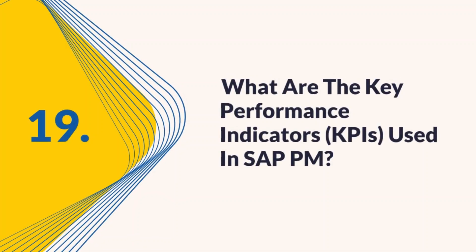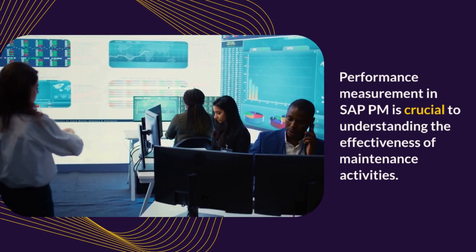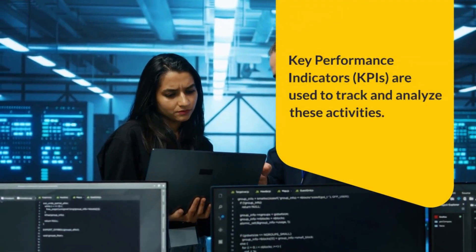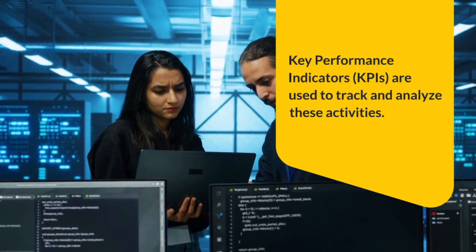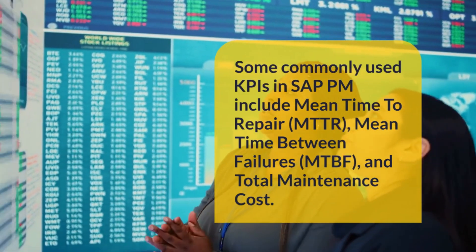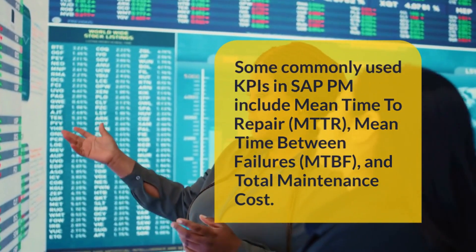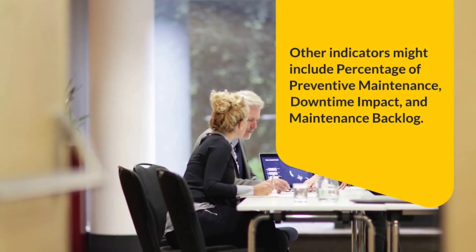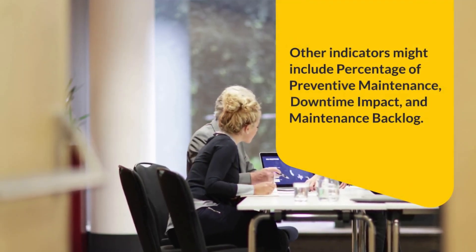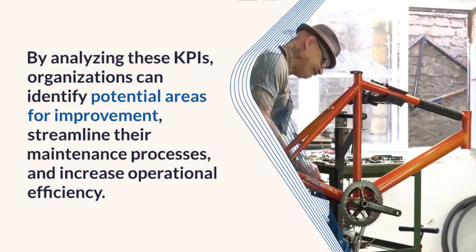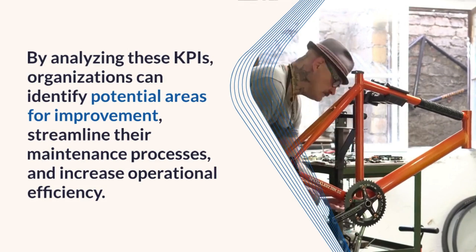Question 19: What are the key performance indicators (KPIs) used in SAP PM? Performance measurement in SAP PM is crucial for understanding the effectiveness of maintenance activities. Commonly used KPIs include Mean Time to Repair (MTTR), Mean Time Between Failures (MTBF), and total maintenance cost. Other indicators include percentage of preventive maintenance, downtime impact, and maintenance backlog. By analyzing these KPIs, organizations can identify potential areas for improvement, streamline maintenance processes, and increase operational efficiency.